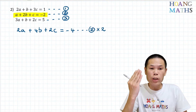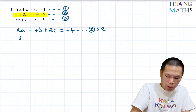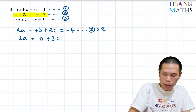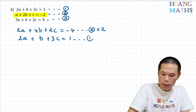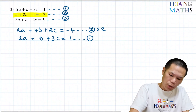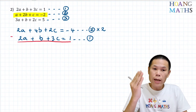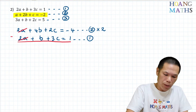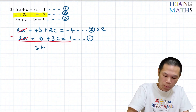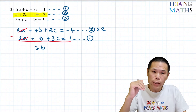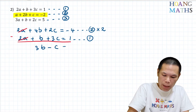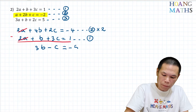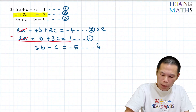Equation one is 2a plus b plus 3c equals one. Subtracting: 2a minus 2a cancels, 4b minus b gives 3b, and 2c minus 3c gives negative c. Negative four minus one gives negative five. So the new equation is 3b minus c equals negative five. I'll call this equation four.